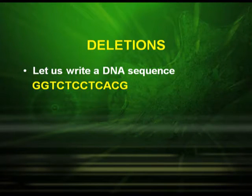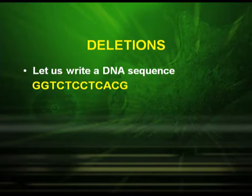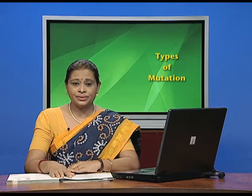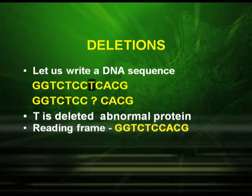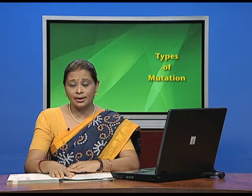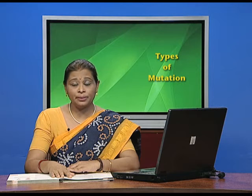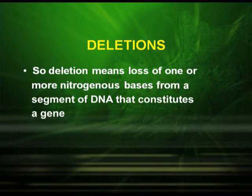Now let us first start with deletions. As the name indicates, deletion means loss. Let us write a hypothetical DNA sequence: G, G, T, C, T, C, C, T, C, C, A, C, G. That means the sequence is changed, the RNA will be changed, and ultimately the polypeptide — this polypeptide may be an abnormal protein. So deletion means loss of one or more nitrogenous bases from a segment of DNA that constitutes a gene.